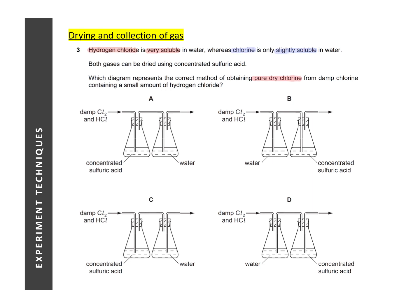Once again, hydrogen chloride is very soluble in water, so we can effectively remove it by bubbling the mixture of the two gases into water first. With that in mind, we can narrow down our answers to either B or D, because in the setup the mixture was passed into water first.